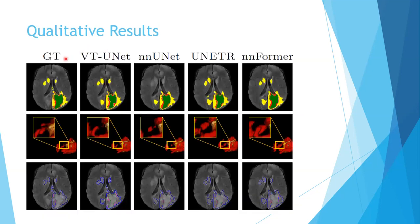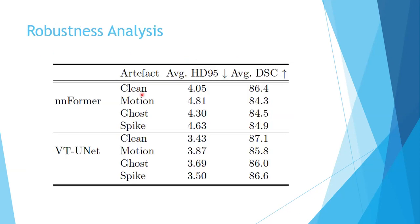For qualitative results, given the ground truth, the VT-UNet has a really good output that very closely matches it, apart from a small region, and is much better than the NN-UNet and UNet-R. The NN-Former comes very close to the VT-UNet output, having the same artifact in one area. The authors also do a robustness analysis comparing the NN-Former and VT-UNet under various MRI artifacts that could occur due to patient movement or scanner issues during scans. Generally, the VT-UNet has more robust output for the different artifacts introduced.